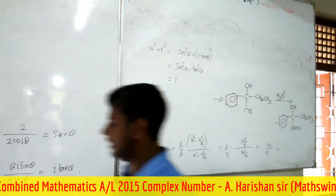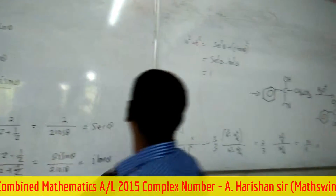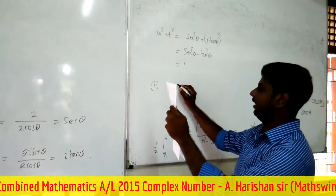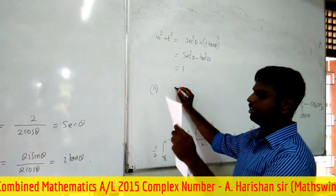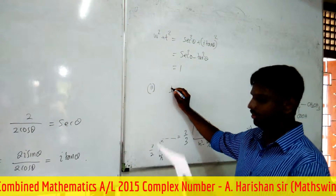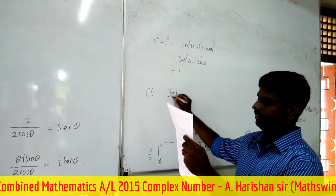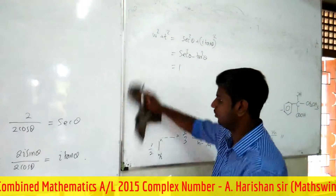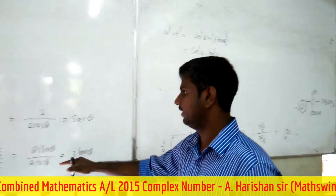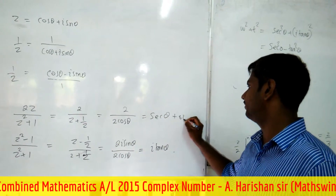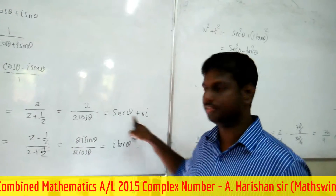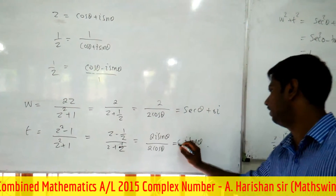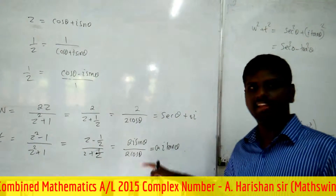They also ask to show that the imaginary part of w is zero. Since w = cos θ, it has no imaginary part, so imaginary part of w is zero. Similarly, imaginary part of t: t = i tan θ, so the real part is zero and imaginary part is tan θ, which is real-valued.